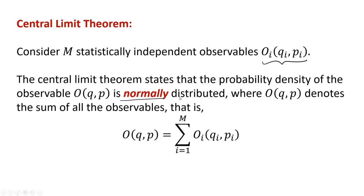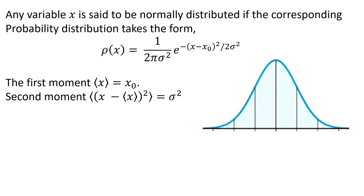What is meant by normally distributed? A variable X is said to be normally distributed if the corresponding probability distribution takes the form: ρ(X) = (1/√(2π σ²)) × exp(-(X - X₀)² / (2σ²)). This is called the normal distribution, also known as the Gaussian distribution.